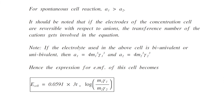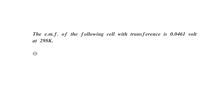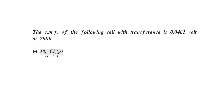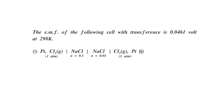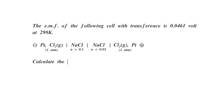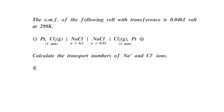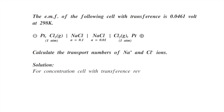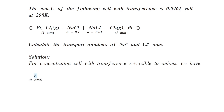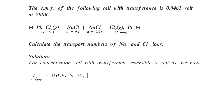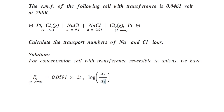Now let's take a numerical example. The EMF of the following cell with transference is 0.0461 V at 298 K: Pt | Cl2(1 atm) | NaCl(0.1 M) ‖ NaCl(0.01 M) | Cl2(1 atm) | Pt. Calculate the transport number of sodium and chloride ions. For a concentration cell with transference reversible to an anion at 298 K, the formula is E_cell = 0.0591 × 2T+ × log(A1/A2).